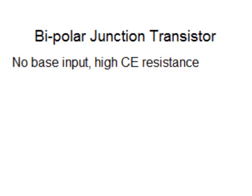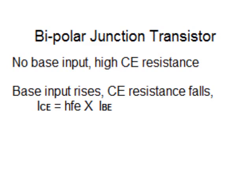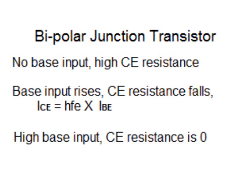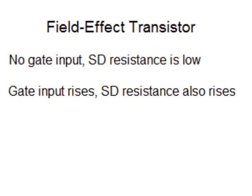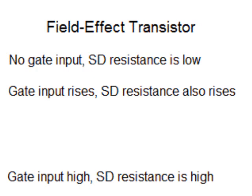Let's compare bipolar junction transistors to field effect transistors. With BJTs, when there is no base input, the collector-emitter resistance is very high — cut off. Adding input signal at the base causes collector-emitter resistance to decrease, and the relationship is described by: collector-emitter current equals HFE (beta) times the base-emitter current. When the base input is very large, the collector-emitter resistance is zero — saturated. With FETs, when there is no signal at the gate, the source-drain resistance is zero — saturated. As gate voltage rises, source-drain resistance increases, and when gate voltage is high enough, source-drain resistance is infinite — the transistor is pinched off.